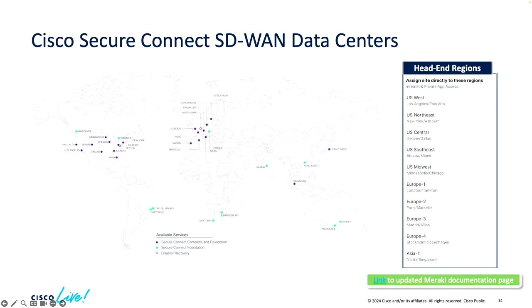This is our global footprint. As you can see, we are globally available through multiple regions. In Asia Pacific, we have data centers in Australia; also US, Europe, India, and Hong Kong. We keep adding more as market demand dictates. Based on demand, we will keep prioritizing adding more data centers. I've added a link here that explains in detail the capabilities of all the data centers — happy to share that.